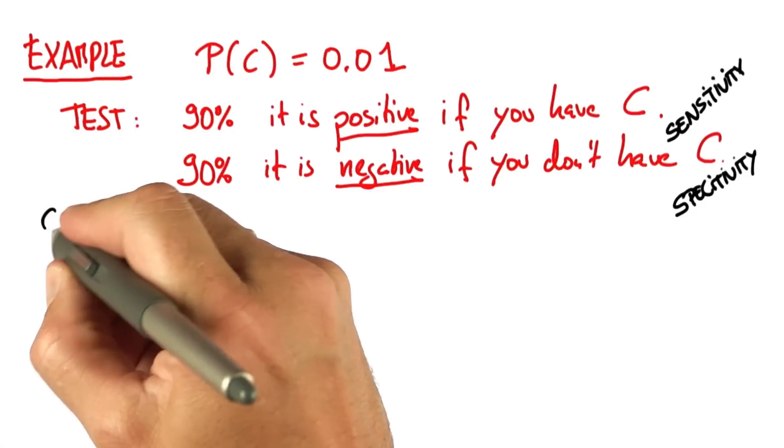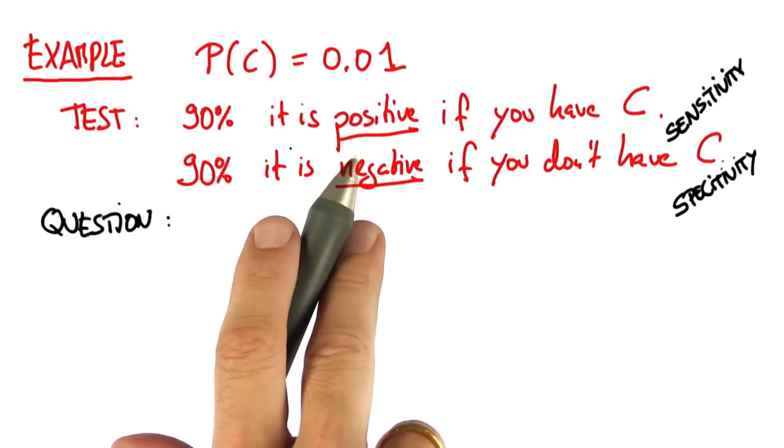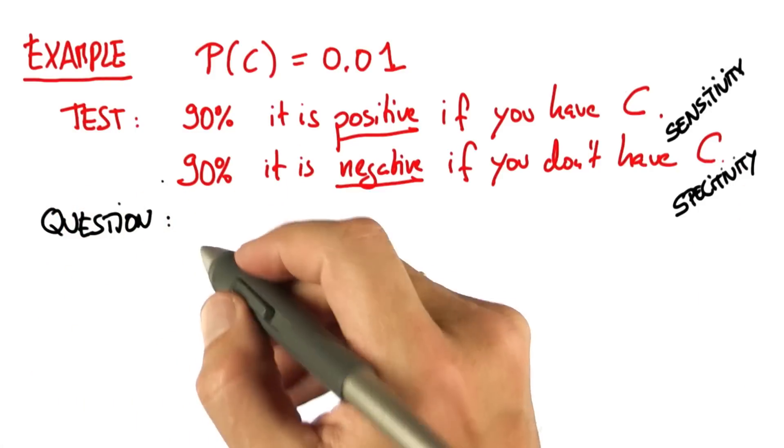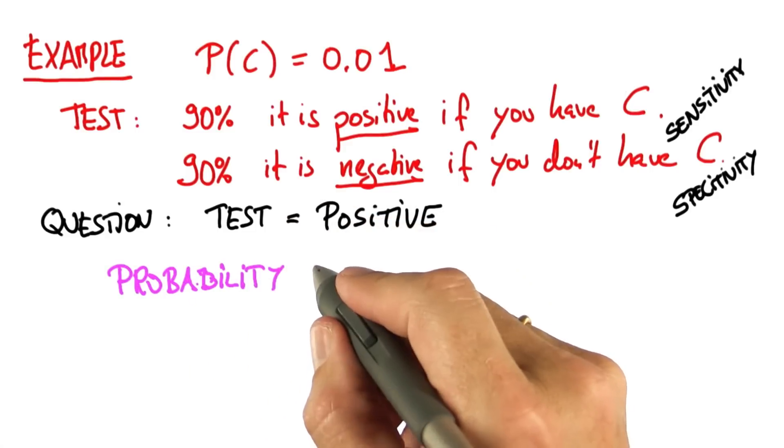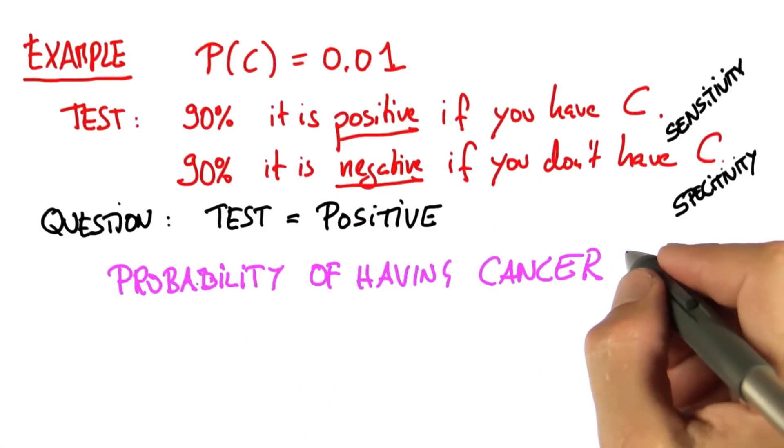So here's my question. Without further symptoms, you take the test, and the test comes back as positive. What do you think is now the probability of having that specific type of cancer?